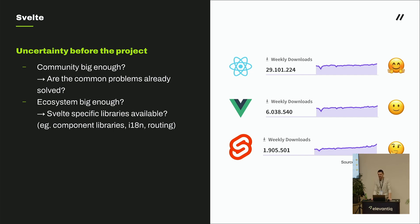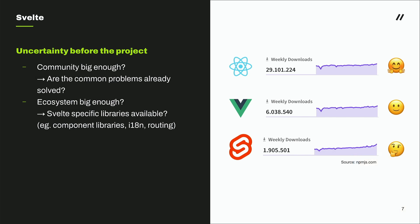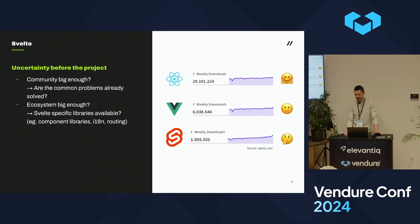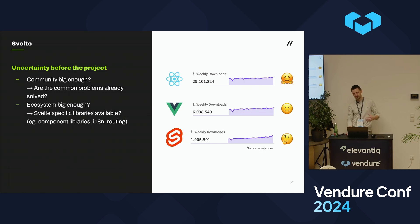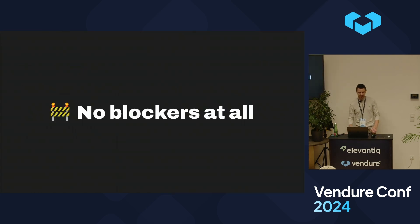Before we started, we weren't really used to making big projects with Svelte and didn't have lots of experience — only one dev brought it up. We asked ourselves the big questions: is the community big enough, meaning are the common problems already solved or do I have to reinvent the wheel? The second big question is whether the ecosystem is big enough. Looking at download rates from NPMJS, Svelte is way behind its competitors like React and Vue — more than ten times more downloads for React — which raised the question of whether Svelte-specific libraries exist for things like component libraries, i18n solutions, and routing.